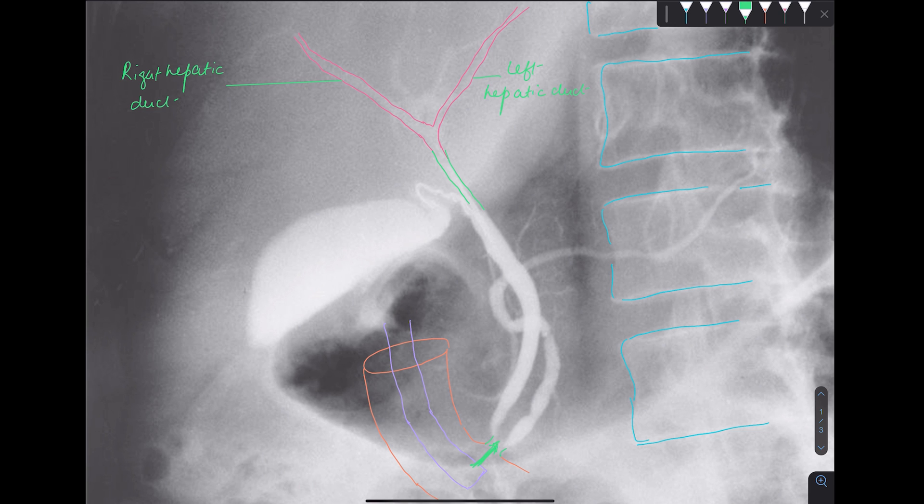And when these ducts, they join together, this is my common hepatic duct. And now you can see very clearly, there is a lobular structure. And this lobular structure is located in the right side. And that is nothing but the gallbladder.